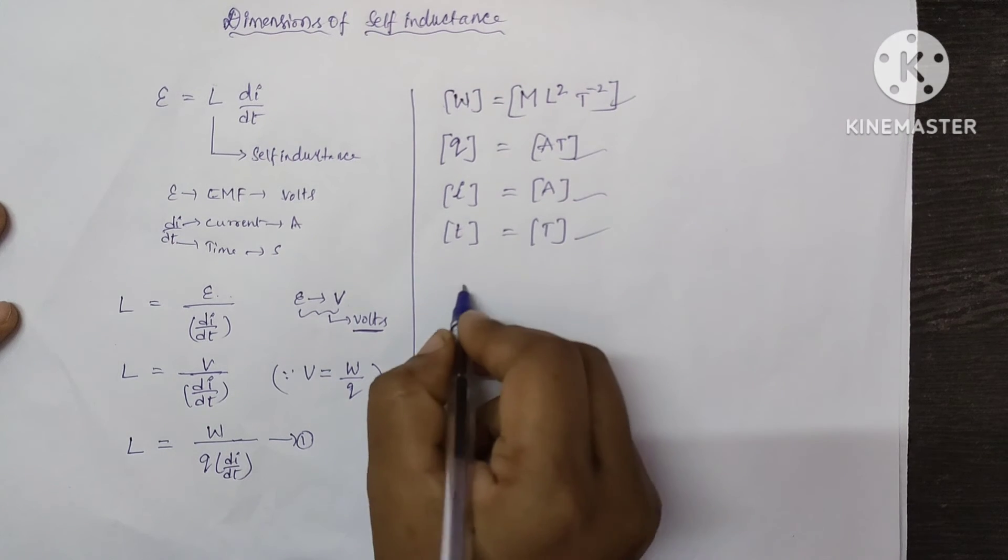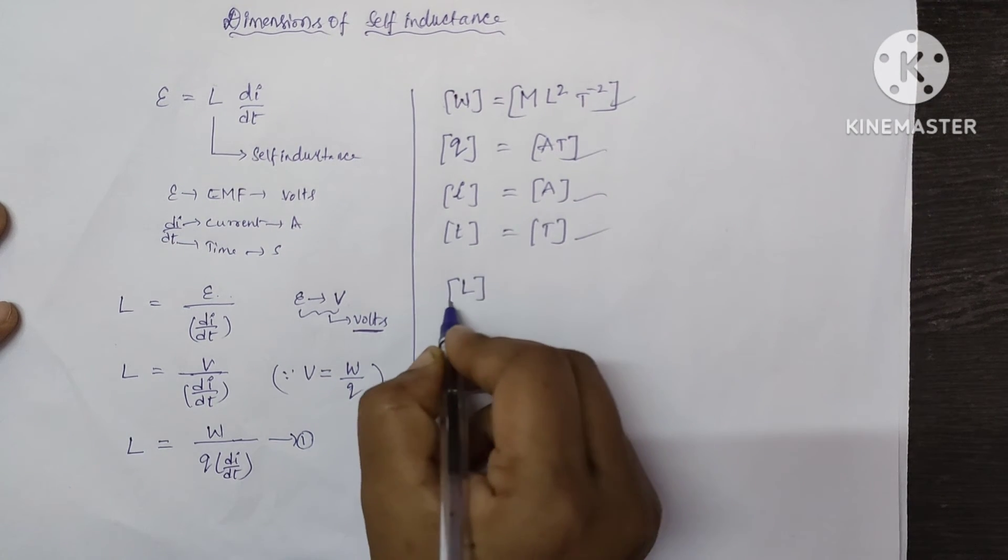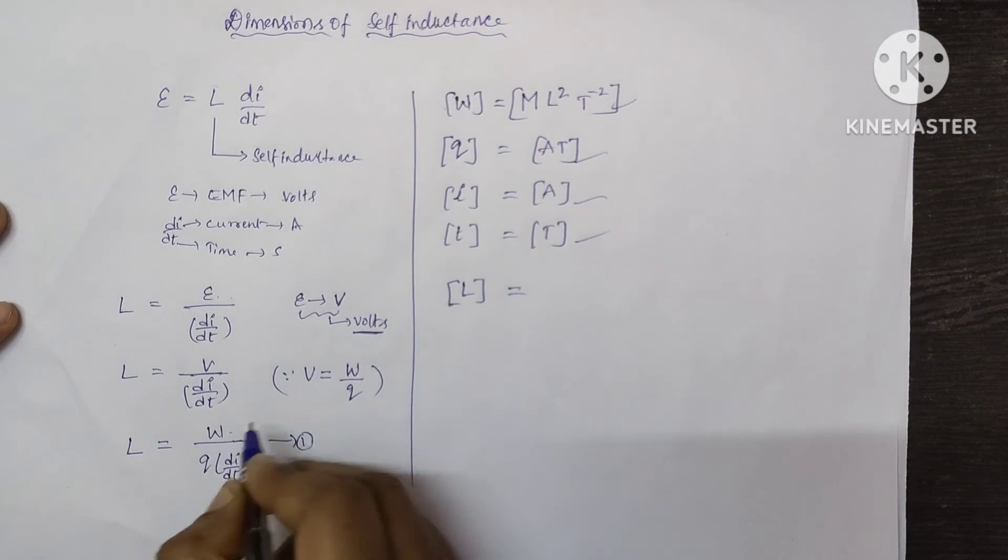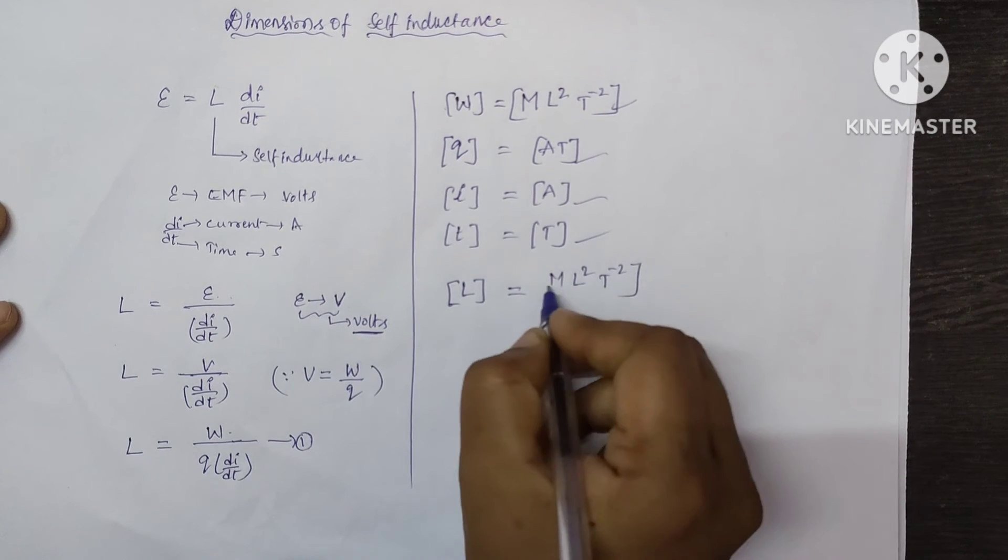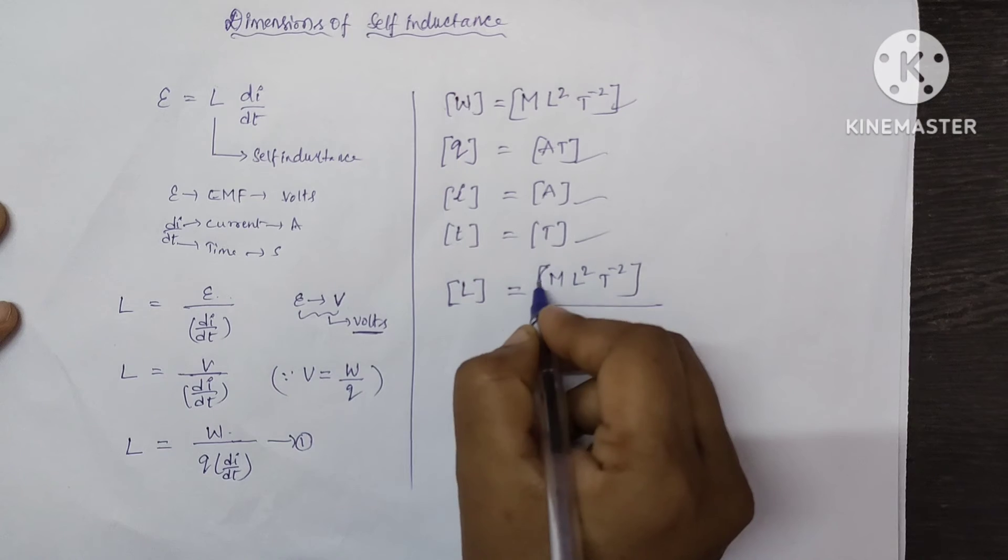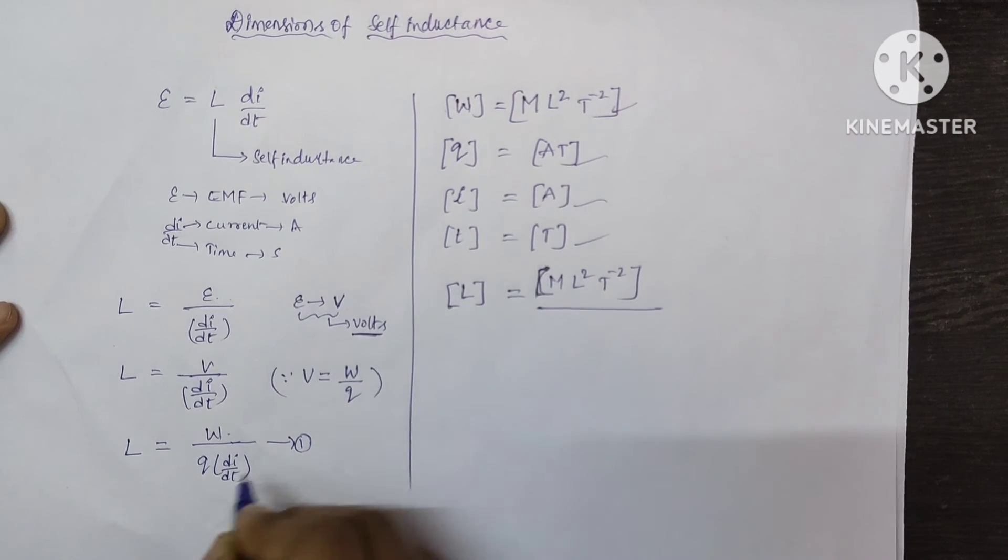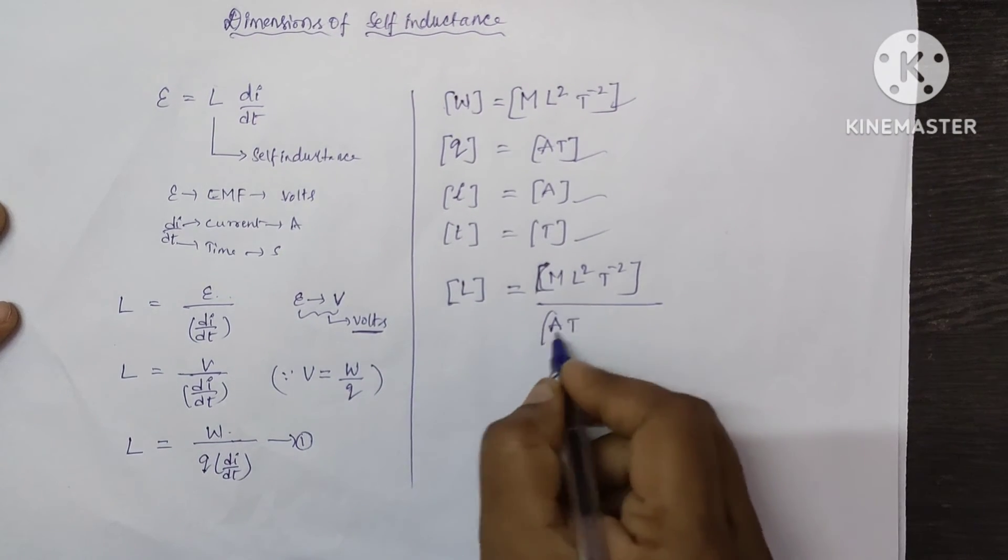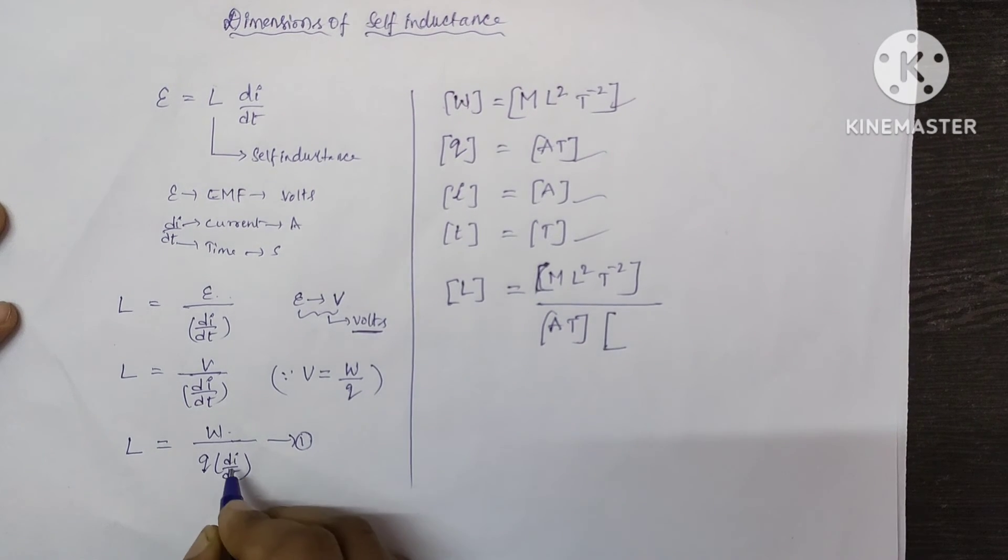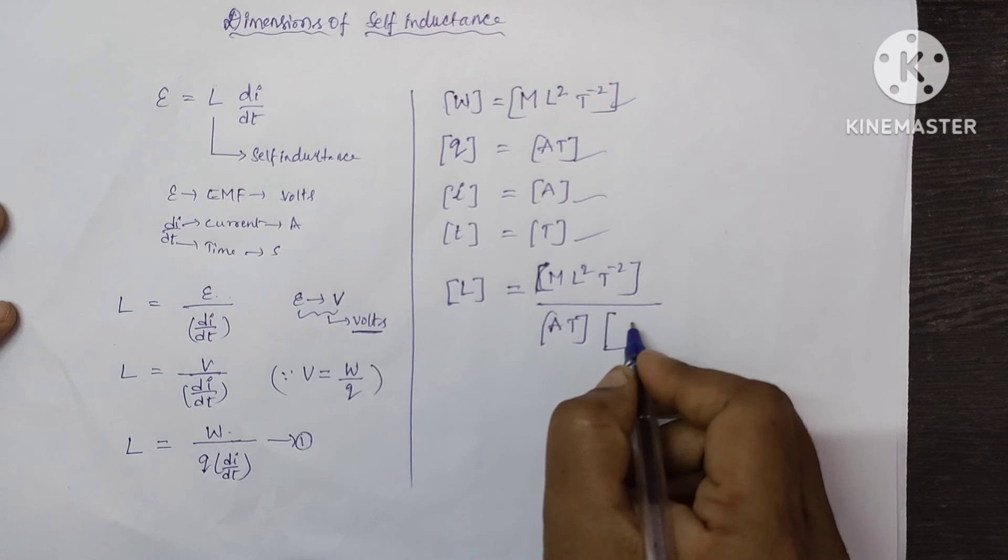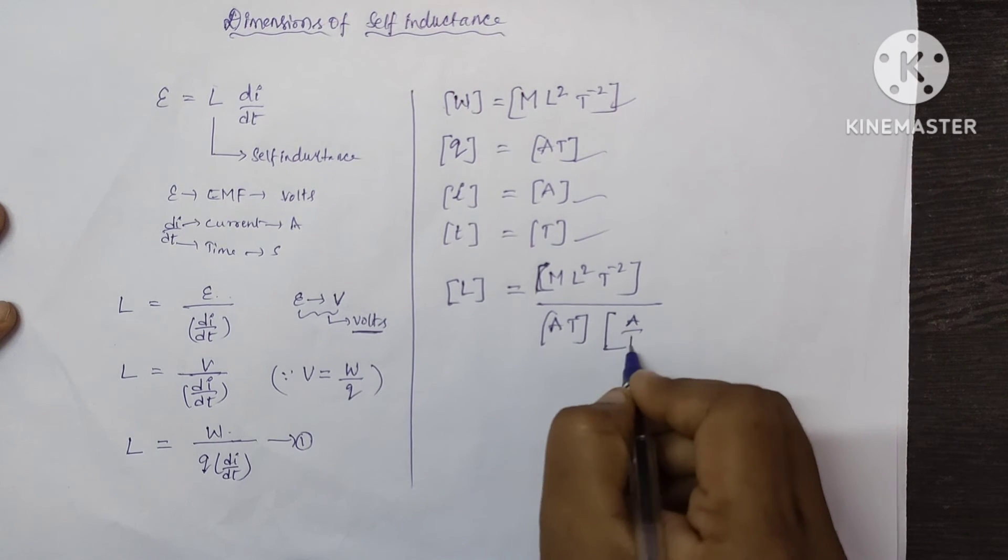Now let us substitute all these values in equation 1. We will get dimensions of self-inductance. W is M L square T power minus 2, and the dimensions of Q is AT, and the dimensions of di by dt, I is A by T.